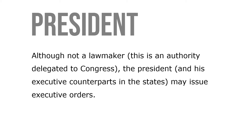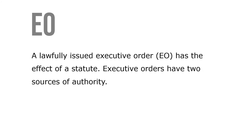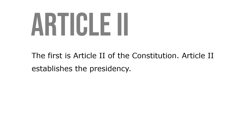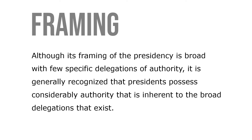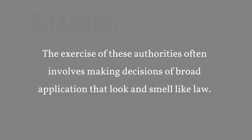Although not a lawmaker — that authority is delegated to Congress — the president and his or her executive counterparts in the states may issue executive orders. A lawfully issued executive order has the effect of a statute. Executive orders have two sources of authority. The first is Article II of the Constitution, which establishes the presidency. Although its framing of the presidency is broad with a few specific delegations of authority, it's generally recognized that presidents possess considerable inherent authority. The exercise of these authorities often involves making decisions of broad application that look and feel like law.